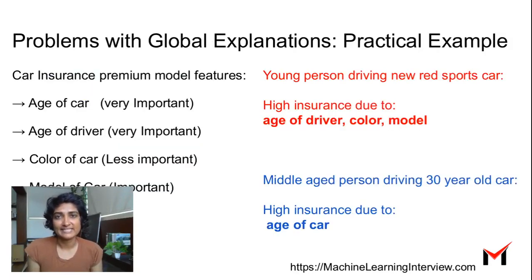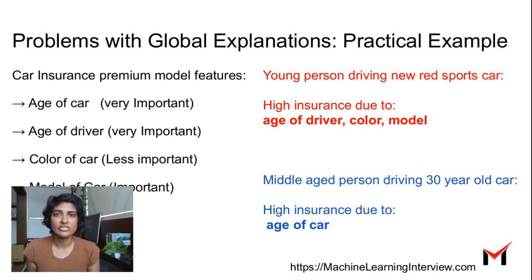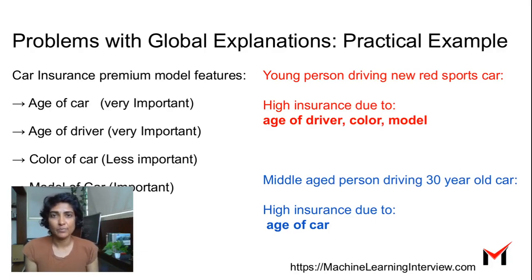Let's take a particular example. Suppose you are trying to predict car insurance premiums with features like the age of the car, the age of the driver, color of the car, the model of the car, and so on. If you build a linear regression model on top of this, you will probably get some global insights: the age of the car is very important, the age of the driver is very important, the color of the car is somewhat less important, and the model of the car is of medium importance.